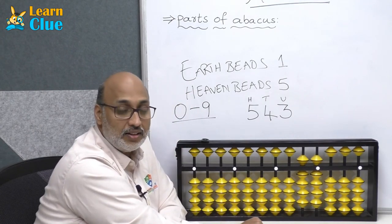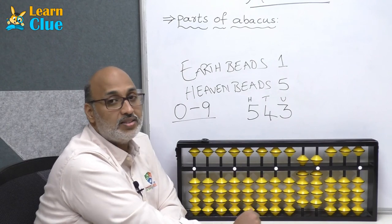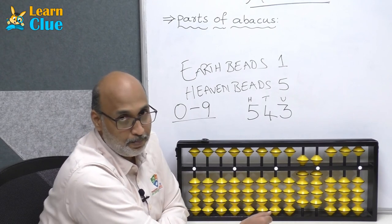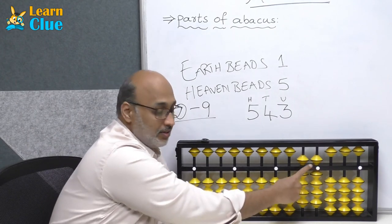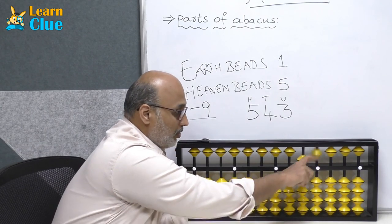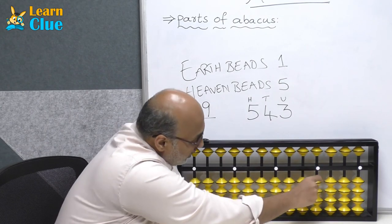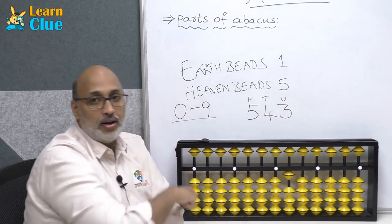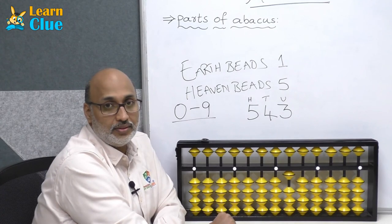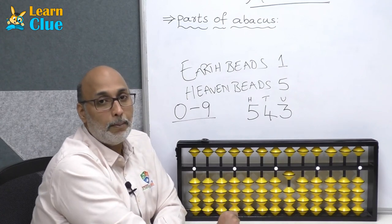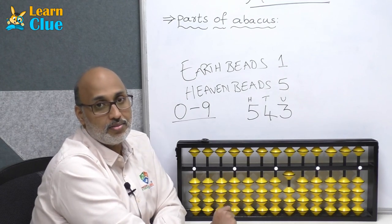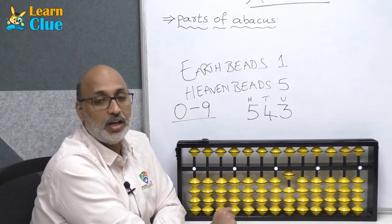After reaching 99, the next number is 100. 100 comes in the 100's place — the column to the left of the 10's place. When you move a bead in the 100's place, that represents 100. This is how you count beads on an abacus. I hope you understand well. Thank you.